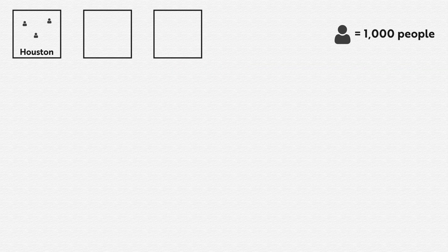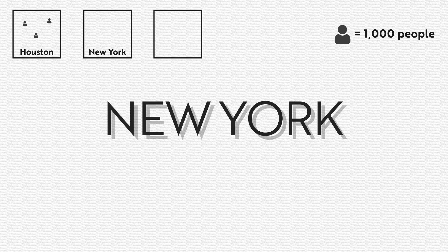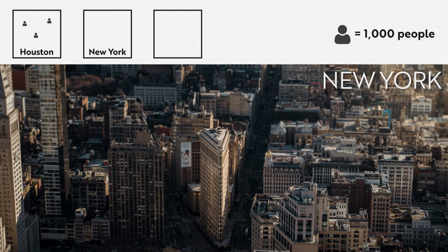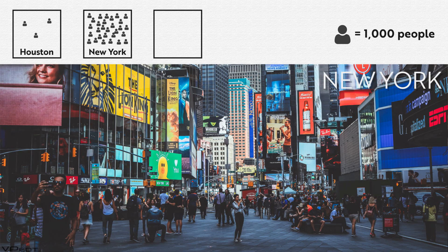Next up, we have New York City. New York is a very dense city, but it is not, in fact, the densest of our three cities. New York has about 29,000 people per square mile as a whole. Of course, if you were to just take Manhattan, it would be almost three times as dense, which just goes to show that density can be manipulated depending on the area size you're using.